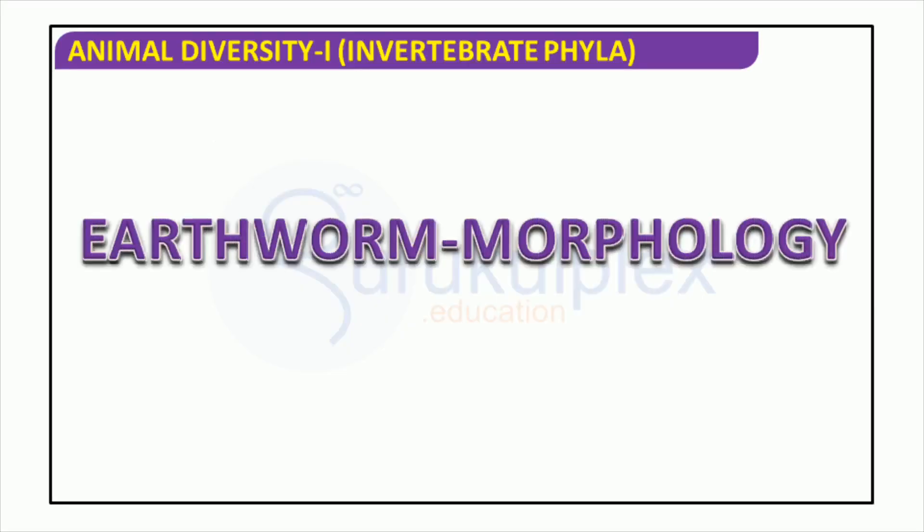The earthworm is a member of the phylum Annelida and a subclass of the Oligochaeta. It has both male and female reproductive systems and is bilaterally symmetric with an anterior and posterior end. Its body is tubular and segmented, each segment having setae that enable the earthworm to move and burrow through the soil. Additionally, the earthworm has a muscular system, a digestive system, and a circulatory system.